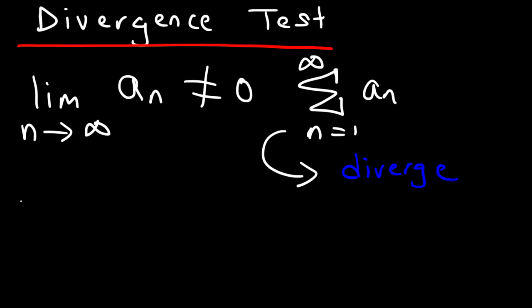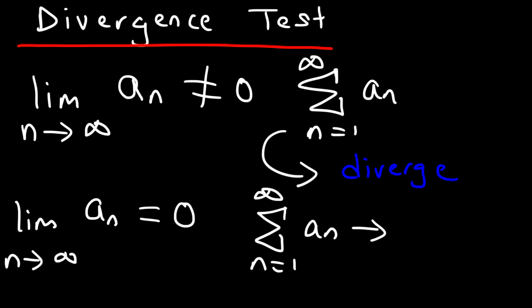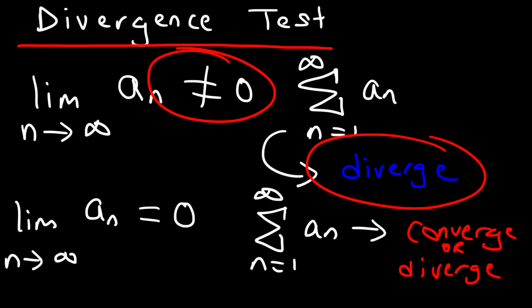Now what about the other half of the coin? If we take the limit as n approaches infinity of the sequence a sub n and it does equal 0, then the infinite series may converge or it may diverge — we can't come to a conclusion. We need to run another test to find out. But if it doesn't equal 0, then the series will diverge.